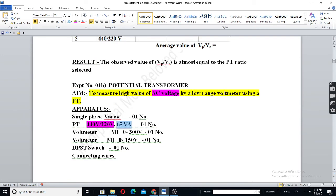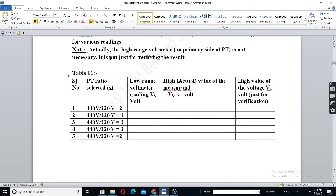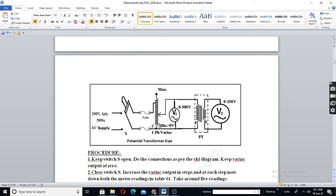Now, how to measure? See, initially we will keep variac output at zero. You can see the table here. As we increase the output of variac, voltage applied to the potential transformer will also increase. Forget V1. There is no need of V1 in the experiment. Because, V1 will be high voltage. We are measuring V1 with the help of V2 and PT ratio.